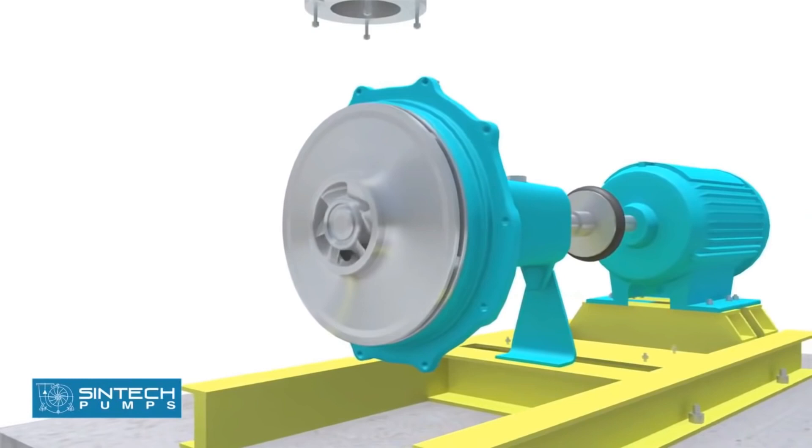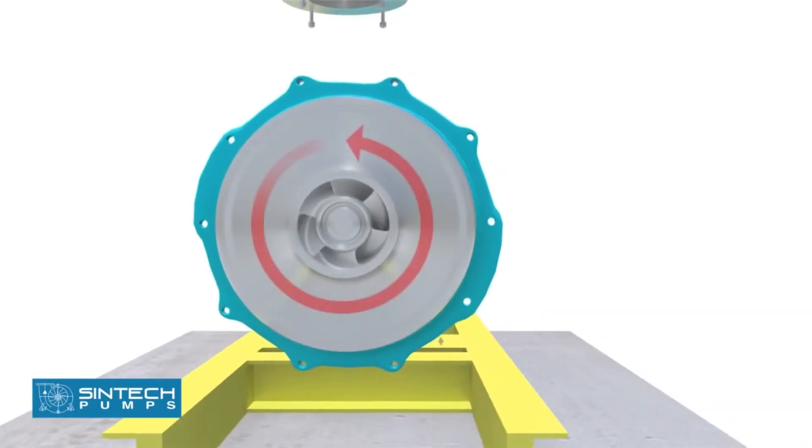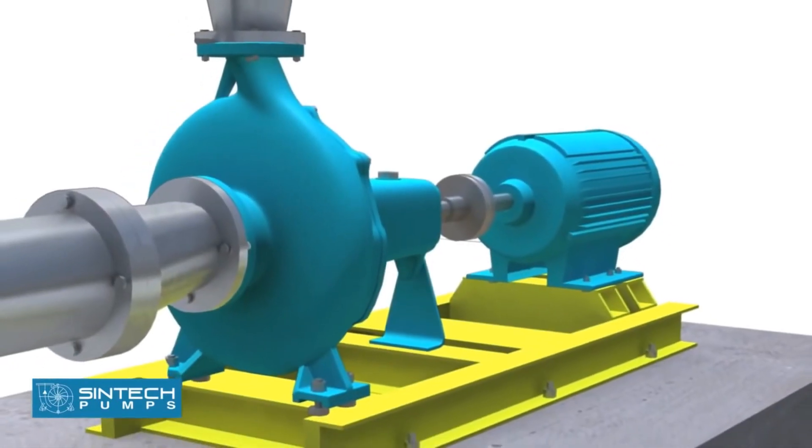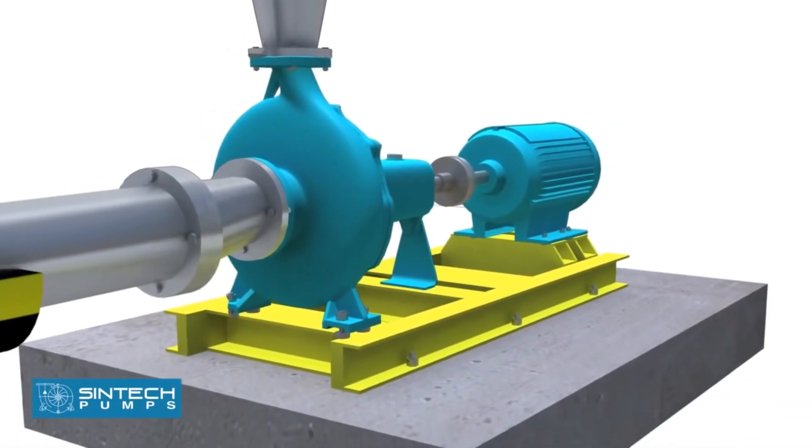The motor should be wired correctly to ensure the correct direction of rotation. This check has to be carried out before the pump is coupled.